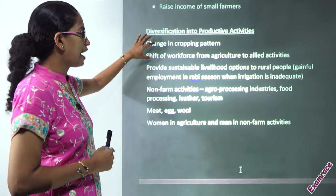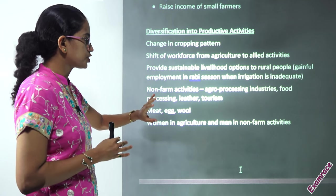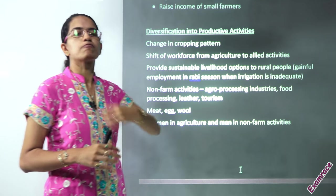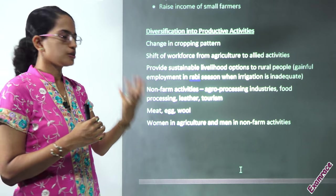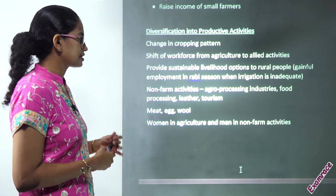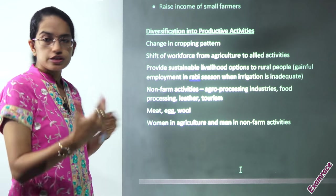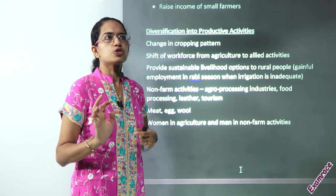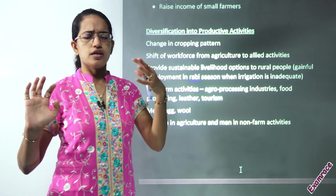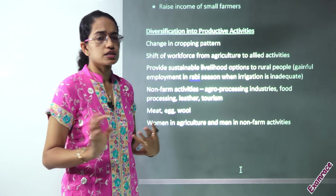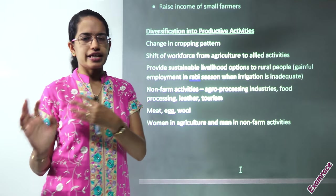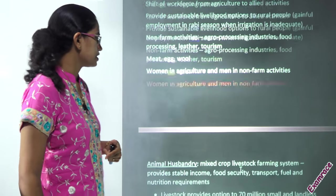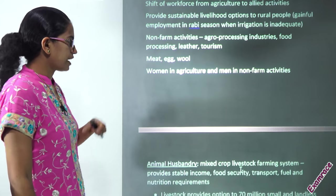Allied activities that should be pushed up include mainly agro-processing like formation of pickles, small-scale industries, leather, and tourism. Rural tourism is another important issue being pushed up — rural tourism has been discussed in the Kurukshetra November or December 2018 edition.